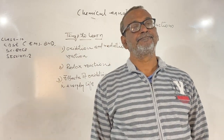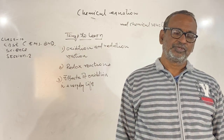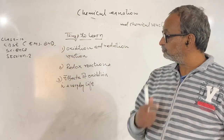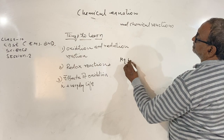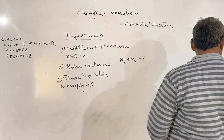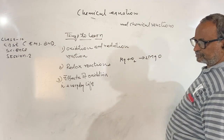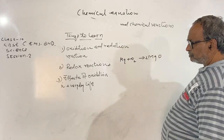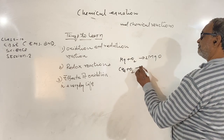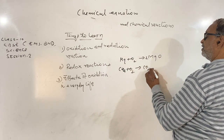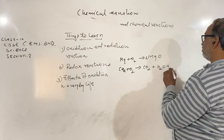When magnesium burns in air, it combines with oxygen and forms magnesium oxide. When natural gas or methane burns in air, it forms carbon dioxide and water, and energy is liberated in the form of heat and light.